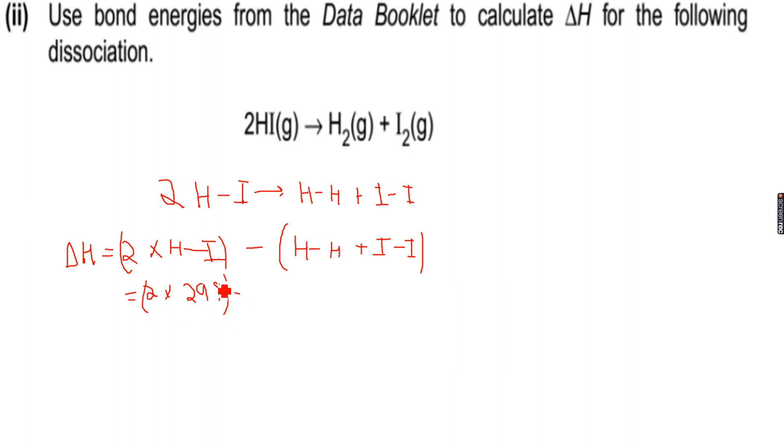2 times 299 minus 436 plus 151. So when I calculate this, I get just a second... 2 into 299 minus 436 plus 151, I get 11 kJ per mole.